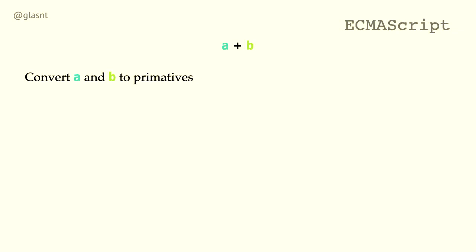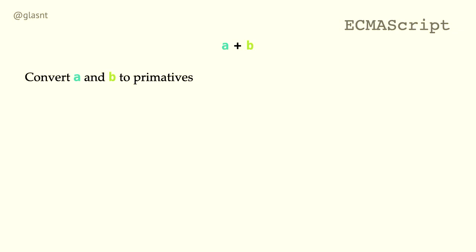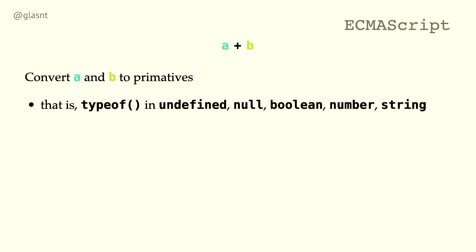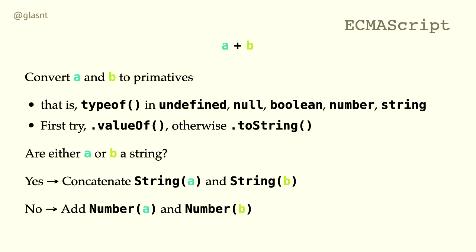Convert the two variables first to primitives — that is, when you run a typeof against it, it'll either be undefined, null, a boolean, a number, or a string. To get that, you need to either run typeof on that value. Otherwise, if it's not a primitive, call toString, and toString will always return a string. Once we've dropped down into our primitive types, if either side of the equation is a string, then we're going to concatenate. Otherwise, we're going to cast them both to numbers and add them together.